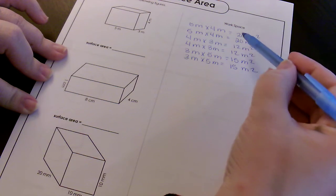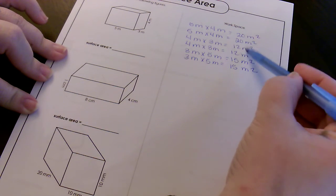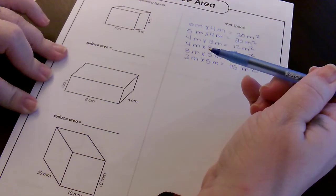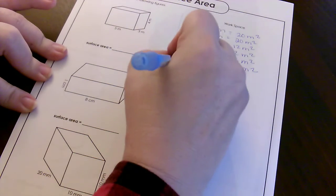So now I have all of my sides and I'm going to add them up: one, two, three, four, five, six sides to my triangular prism. I'm going to add them up.